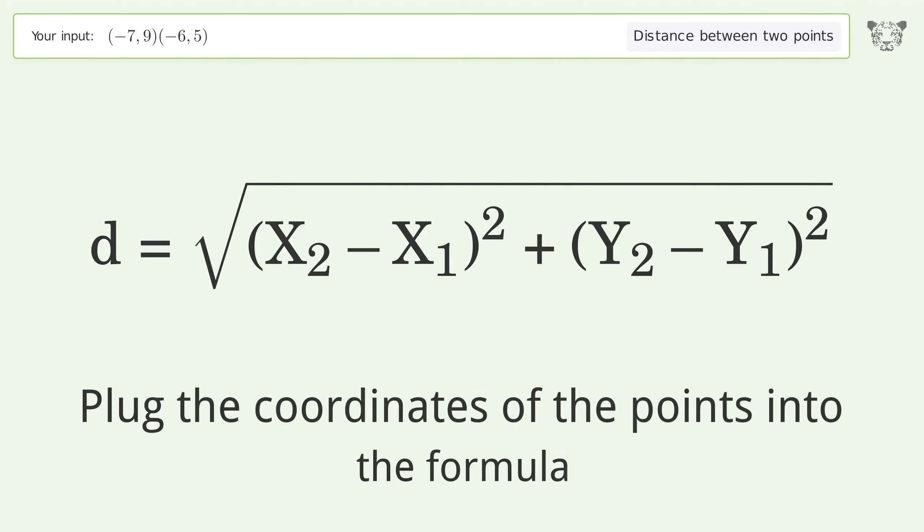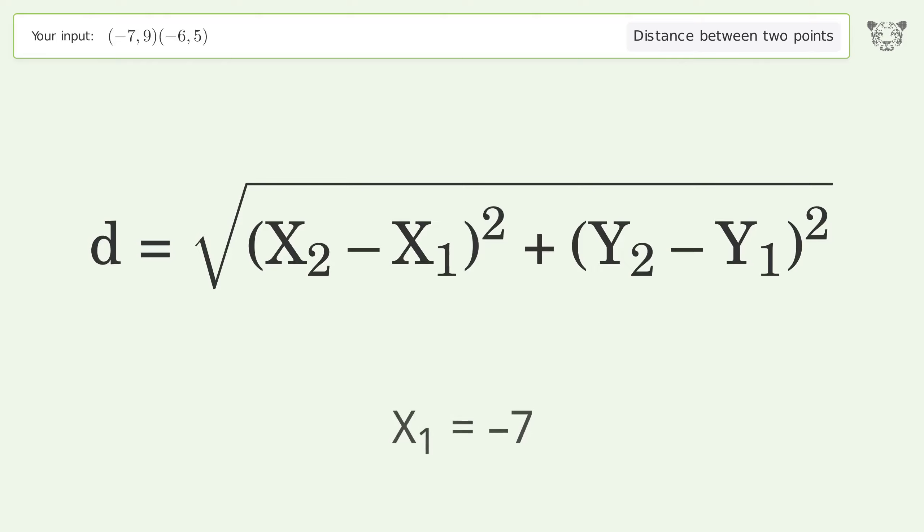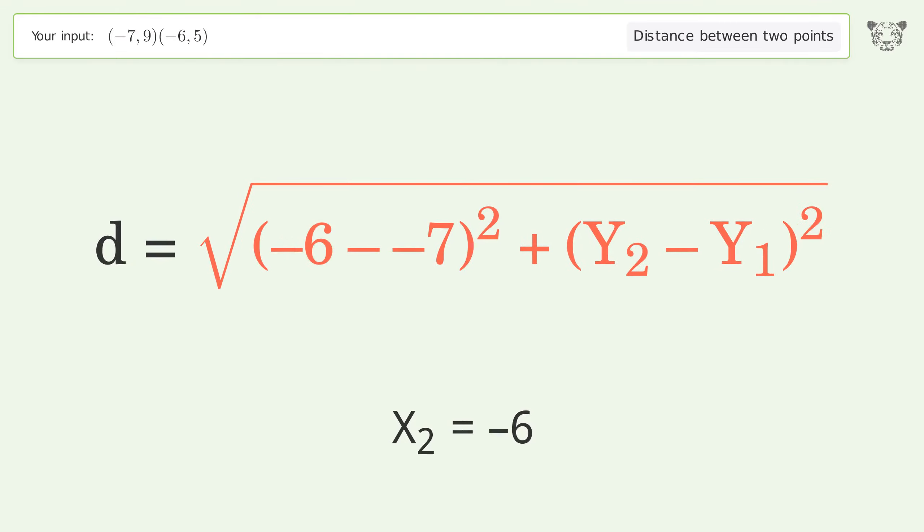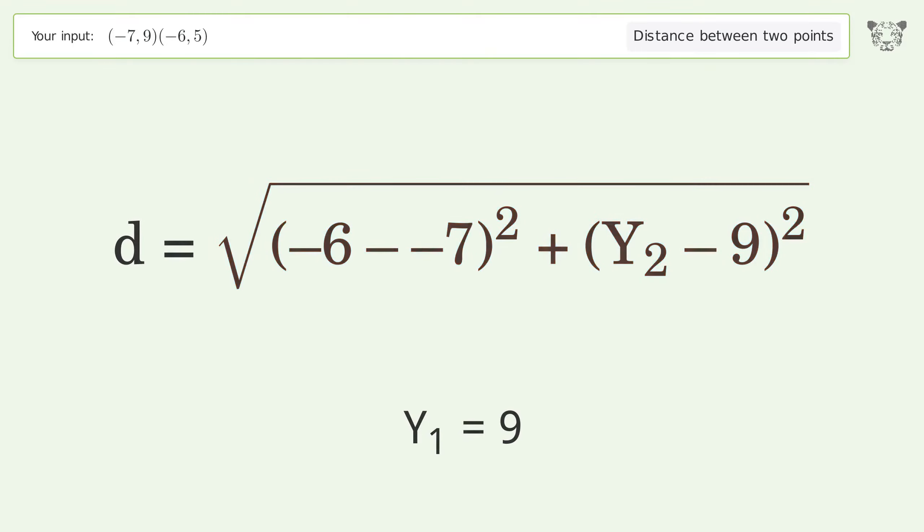Plug the coordinates of the points into the formula: x1 equals negative seven, x2 equals negative six, y1 equals nine, y2 equals five.